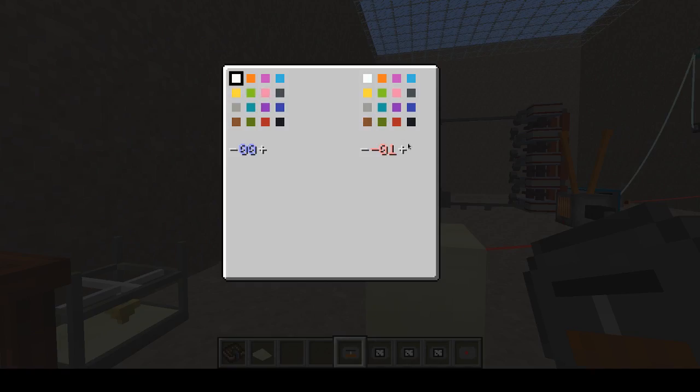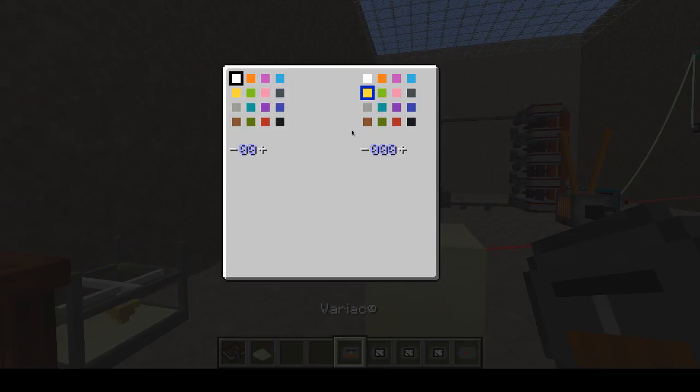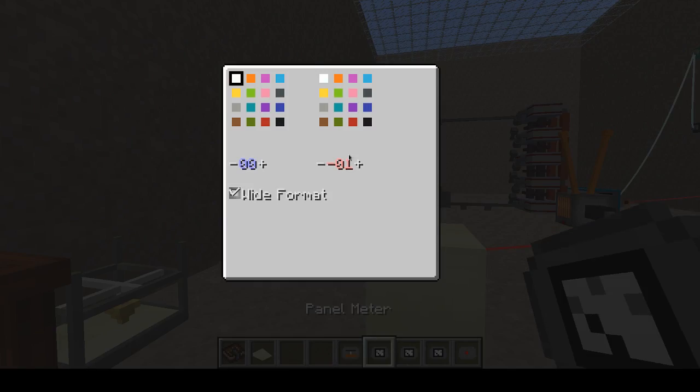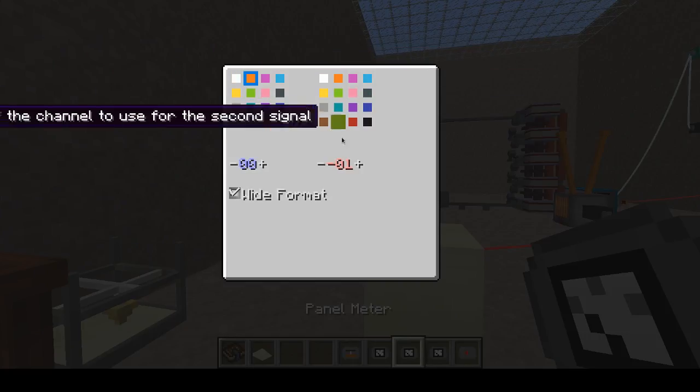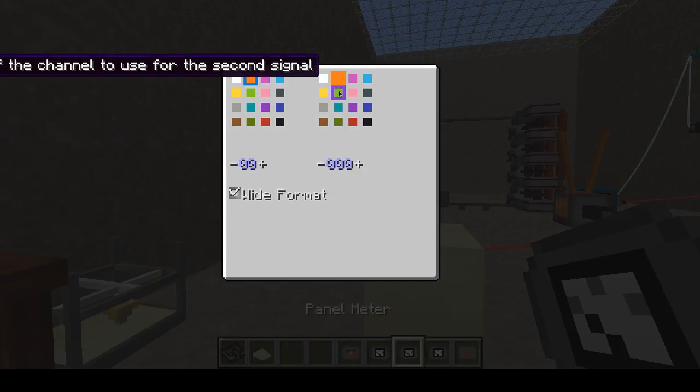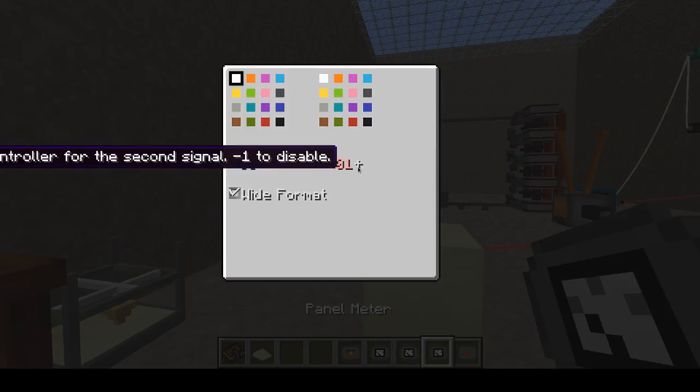Charging voltage is on the yellow and white channel, so a variac to set it, a panel meter to monitor it. The bottom capacitor voltage is orange and lime, and the top capacitor voltage is magenta and pink.